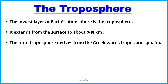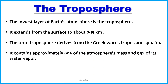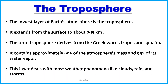It contains approximately 80 percent of atmospheric mass and 99 percent of its water vapor. This layer deals with most weather phenomena like cloud, rain, and storm.